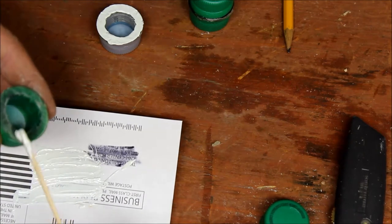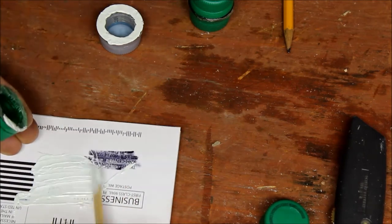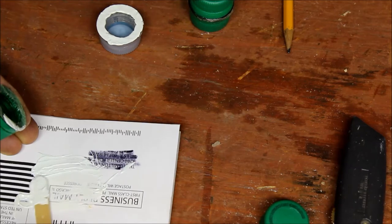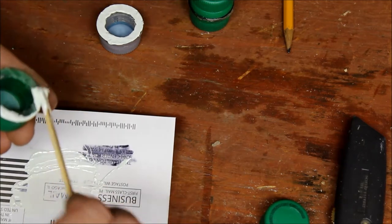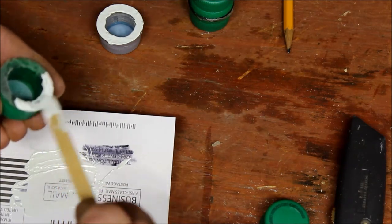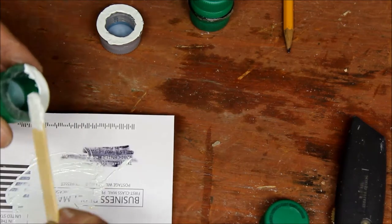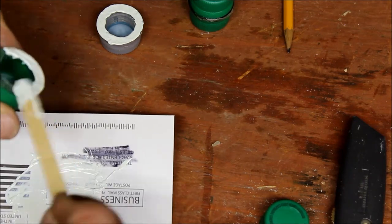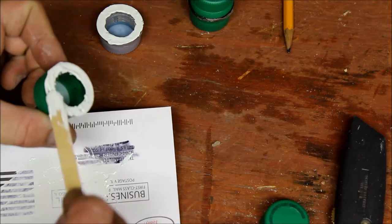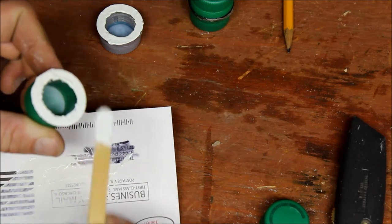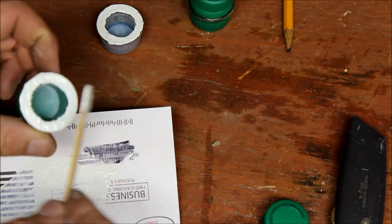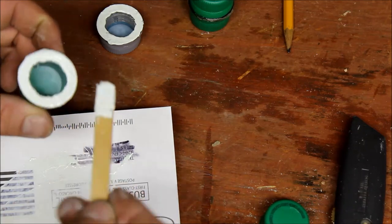And any time you include matches, unless you have Strike Anywhere matches, which they don't really make the way they used to, you are going to want to put a little striking pad from the matchbox in there. Don't forget that. This could even be a great way to store some tinder in there. Store some dryer lint.